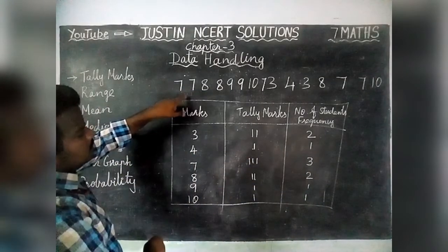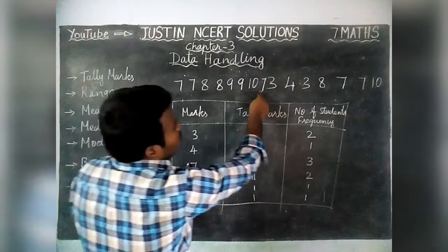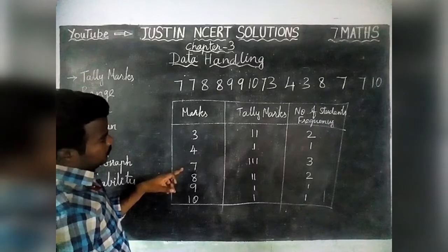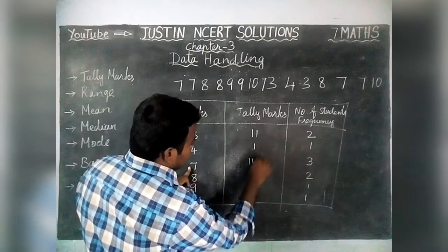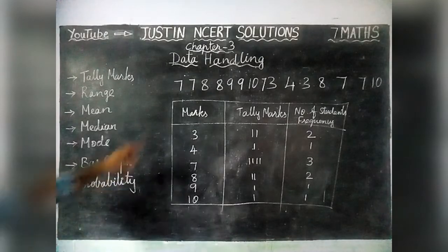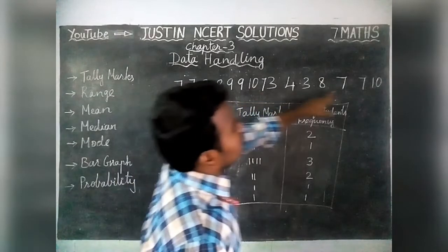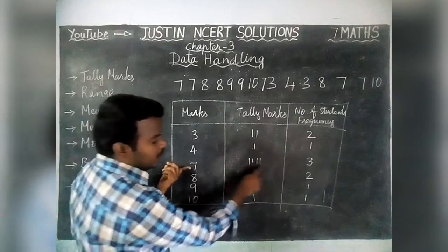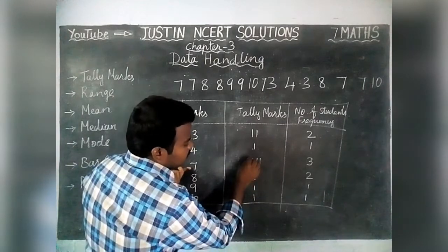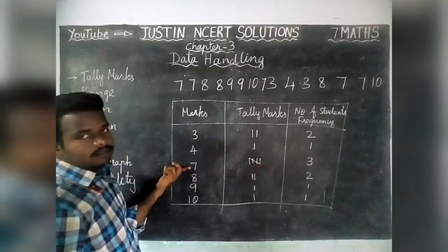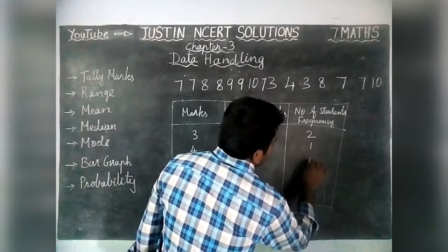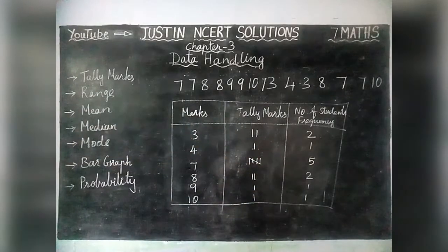Now checking: in 7, totally 4 students are there, so we add another one — making 5 students got 7 marks. After writing 4 tally marks, we should not write just another line. We have to draw a diagonal line. The meaning of this diagonal line is 5. So 5 students got 7 marks.